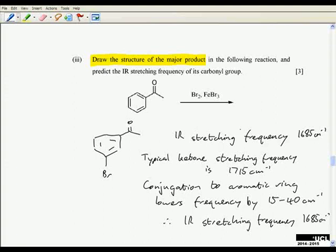Now in this case, all I've asked is for you to predict the IR stretching frequency, and so if you say 1685 you'll get the marks. The advantage of writing these extra couple of lines is that if, for example, you've forgotten what the typical ketone stretching frequency is and you think it's 1750 or 1800, but you can remember that it will be lowered by conjugation to the aromatic ring, you can get some partial credit for that.